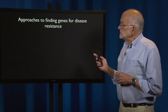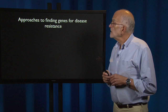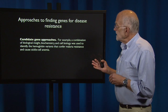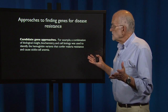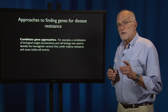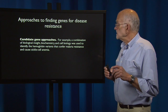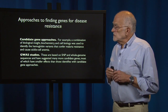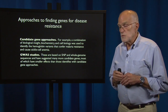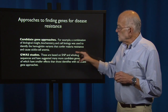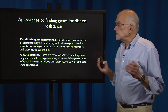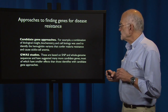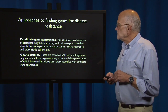There are a number of approaches to find genes for disease resistance. The first is the candidate gene approach, and this is the older of the two. For example, a combination of biological insight, biochemistry, and cell biology was used to identify sickle cell anemia and other hemoglobin variants that confer malaria resistance. The more recent approach is genome-wide association studies, GWAS. These are based on single nucleotide polymorphisms and whole genome sequences, and they have suggested many more candidate genes, most of which have much smaller effects than those identified with candidate gene approaches.